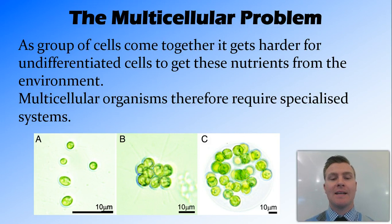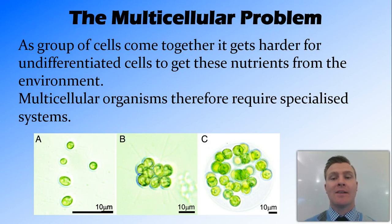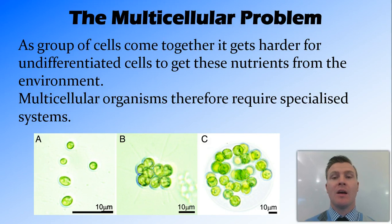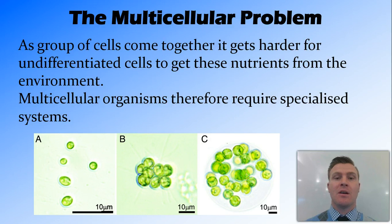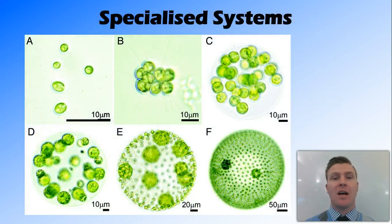Once we start getting multicellular organisms together — so more than one cell — some of that cell membrane ends up getting covered by the ones on the outside of it. So it's harder for the nutrients to get all the way inside to all the cells in this organism. Therefore, we have specialized systems, where cells start specializing and we start getting systems forming.